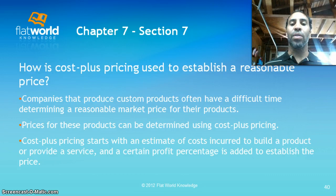Cost plus pricing starts with an estimate of cost — always an estimate because you don't have a crystal ball — an estimate of cost incurred to build a product or provide a service, and a certain profit percentage is added to establish the price. We need to make a certain amount of money.